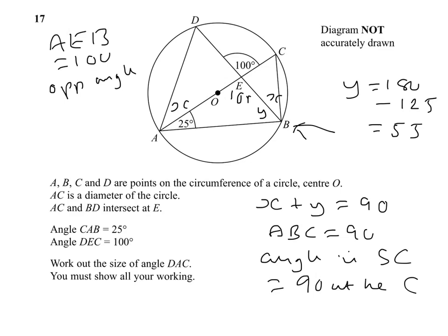I won't write that down, but hopefully you can see what I'm going on about. 25, 100 and Y make 180. So that gives me 55 for Y.